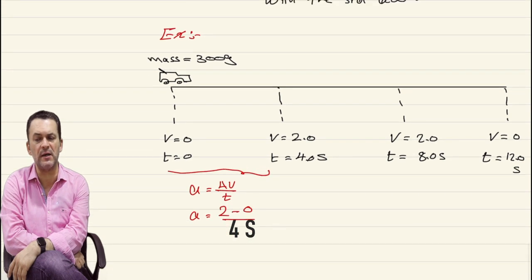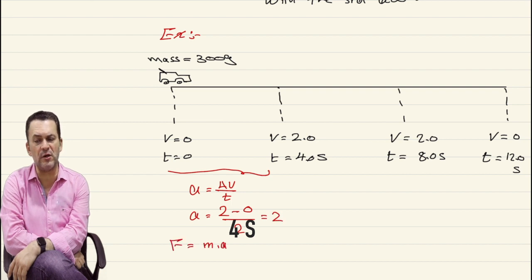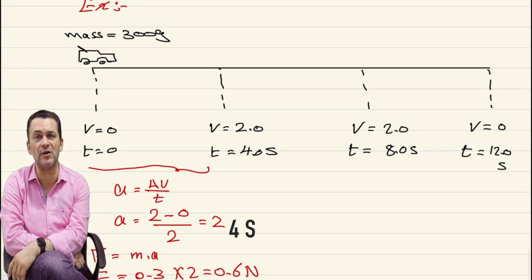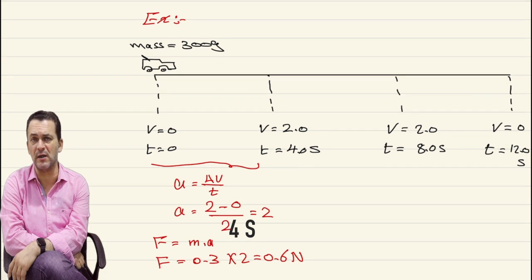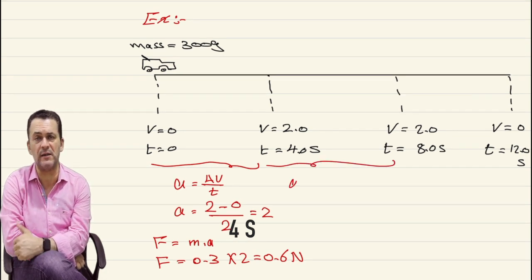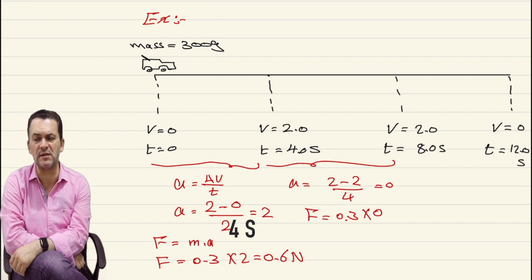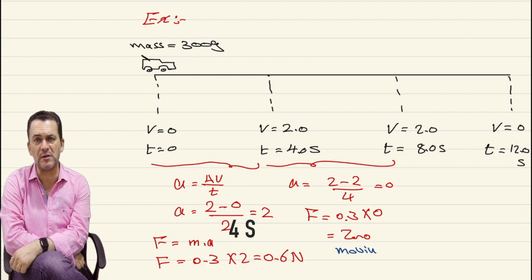In the second stage, acceleration equals (final minus initial) divided by time, which gives you zero. So force equals 0.3 times 0, which gives zero — there is no force acting on the body. Keep in mind: in this stage the body is moving but with a constant velocity. The direction is constant and the velocity magnitude is constant, so the total resultant force acting on the body is zero.